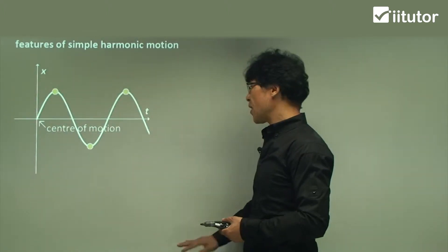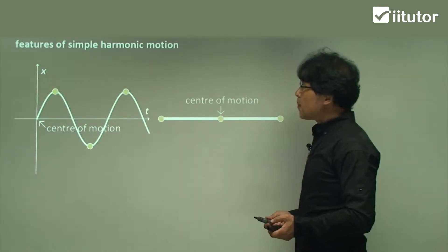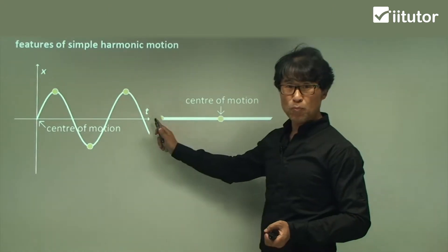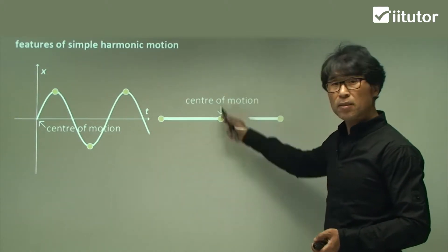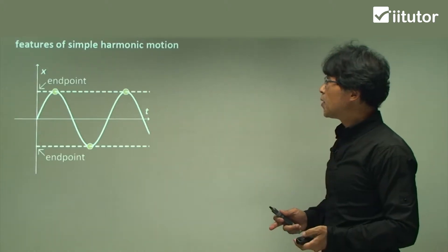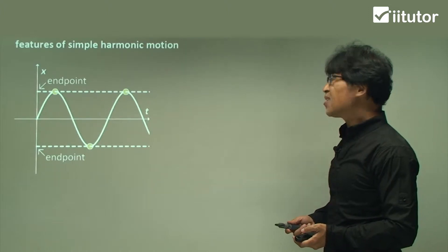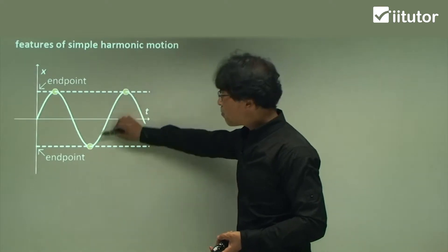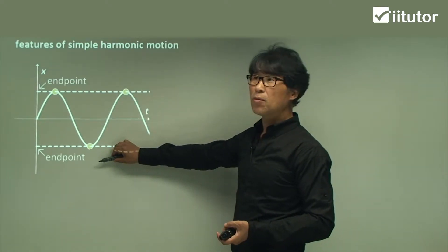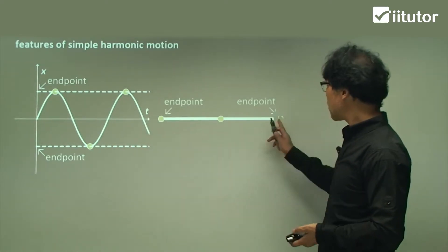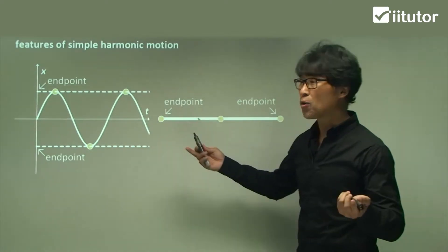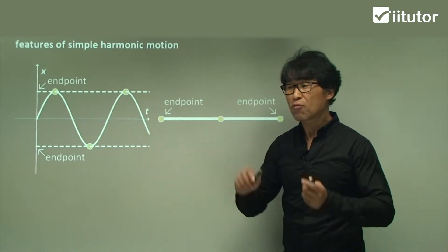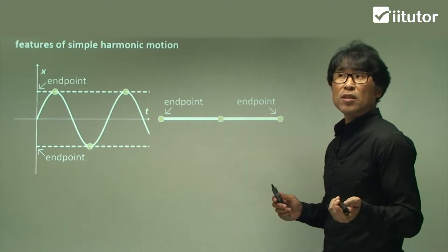The center of the motion can be anything depending on the activity. Rightmost position and leftmost position, that's the center. It can be anywhere. The end point is the maximum height, maximum or minimum value, rightmost or leftmost. The end point is obtained by the use of the amplitude from the center point.